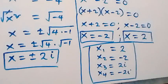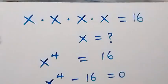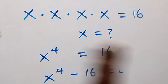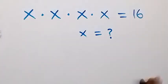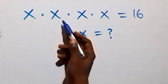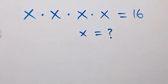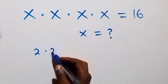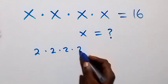We can verify by substituting the value of x. For x equals 2, we have 2 times 2 times 2 times 2. That gives us 2 times 2 equals 4, times 2 equals 8, times 2 equals 16. So the left hand side equals 16, which satisfies the given problem.